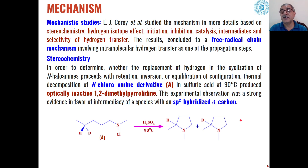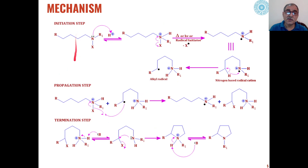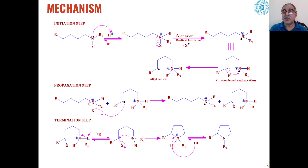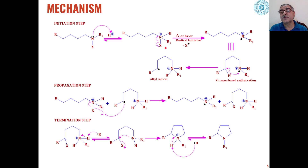Based on all these factors collectively, a mechanism has been given which involves three steps: initiation step, propagation step, and termination step — the basic steps seen in most free radical reactions. In the initiation step, N-chloro-amine reacts with the strong acid used for this cyclization reaction. The lone pair present on nitrogen interacts with the proton from the acid and we get ammonium intermediates in the reaction. Then, either thermally or photochemically, the nitrogen-halogen bond breaks through formation of a halogen free radical and a nitrogen-based radical cation is formed.